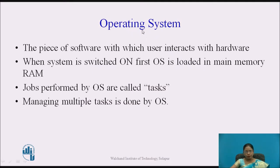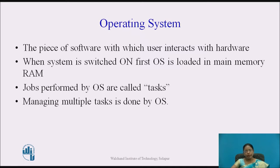What is an operating system? An operating system is the piece of software with which the user interacts with hardware. When the system is switched on, the OS is first loaded into the main memory, that is RAM. Managing multiple tasks is also done by the OS — the OS performs scheduling. We will look at the details of the OS further.